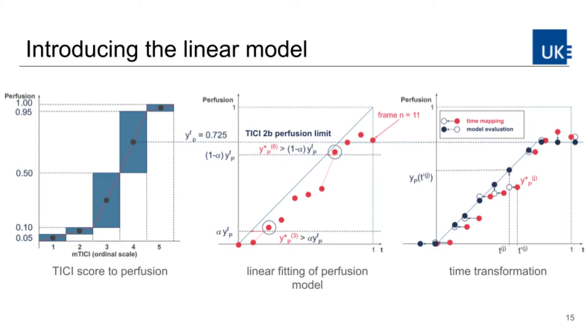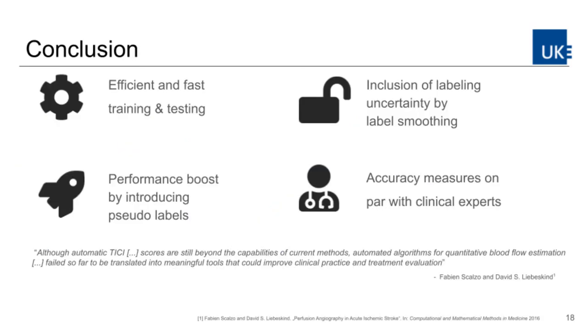Furthermore, we introduce a new loss function to handle the higher uncertainty and capitalize on the ordinal nature of the TIKI score. With this method, we are able to achieve observer variability measures in the range of human experts, all this while being the first to tackle this problem.